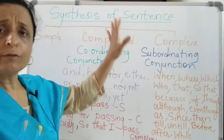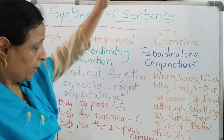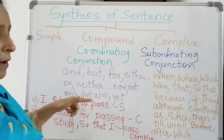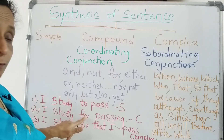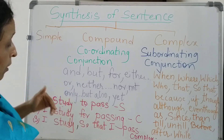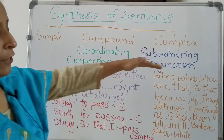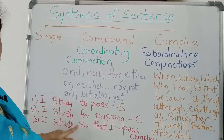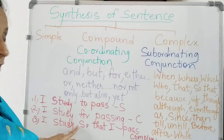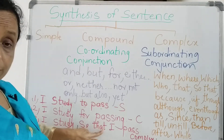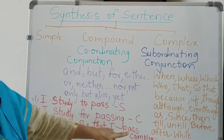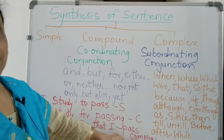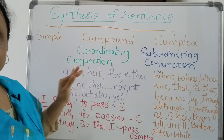Now let us take one more example. I study to pass. I study for passing — here I have used a coordinating conjunction 'for'. Now the same sentence made into a complex sentence: I study so that I pass. You have to put a comma after the main clause, then put the subordinating conjunction, and then the subordinating clause. So 'I study, so that I pass' — this is a complex sentence. This is how you synthesize different types of sentences.